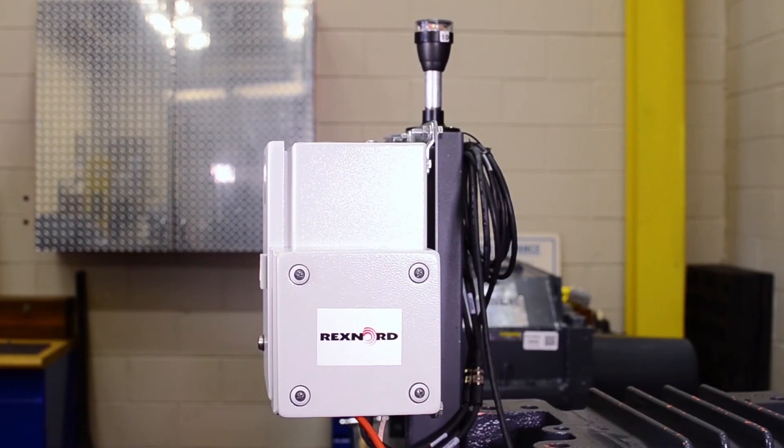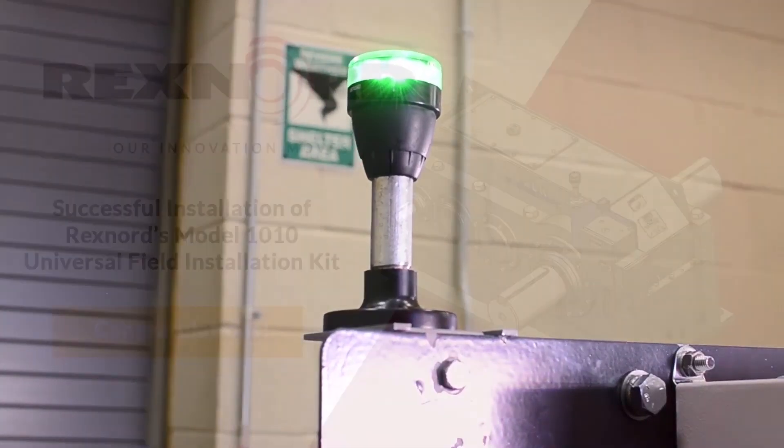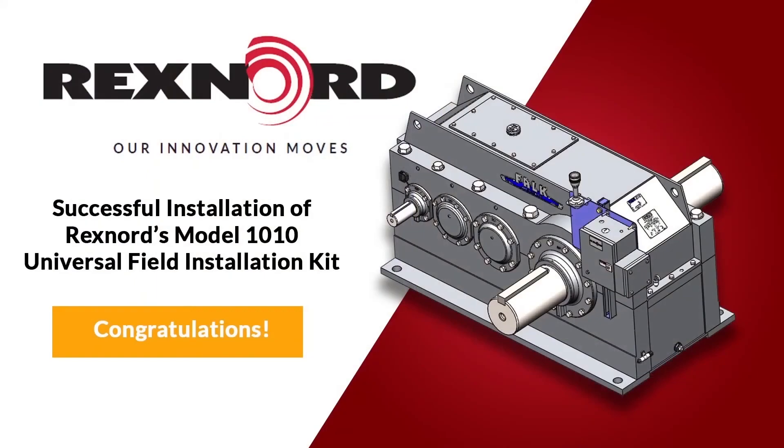The edge device may take a few minutes to power on and when the device is ready, the andon light will illuminate green, indicating that everything has been installed properly. This completes the installation of Rexnord's Smart Condition Monitoring System Model 1010 Universal Kit on A-plus or Y-unit gear drives.